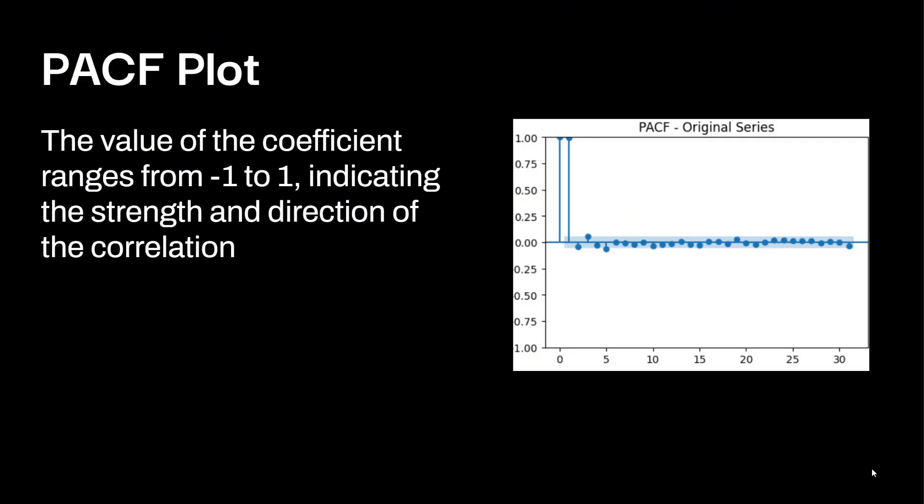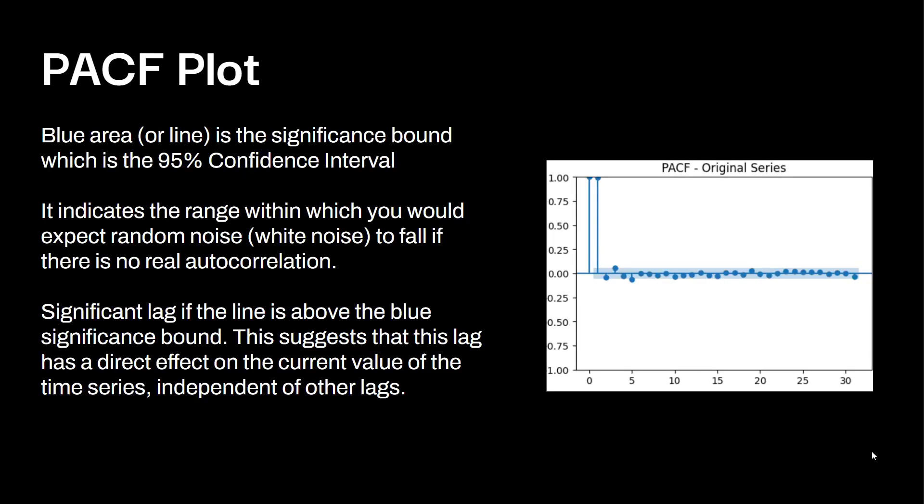The value of the coefficients in this PACF are going to range from negative one to one, indicating the strength and direction of the correlation. The blue area is the significance bound, which is the 95% confidence interval, indicates the range which you would expect random noise or white noise to fall. If there's no real autocorrelation, significant lag is if the line is above the blue significance bounds. This suggests that this lag has a direct effect on the value of the time series independent of other lags.